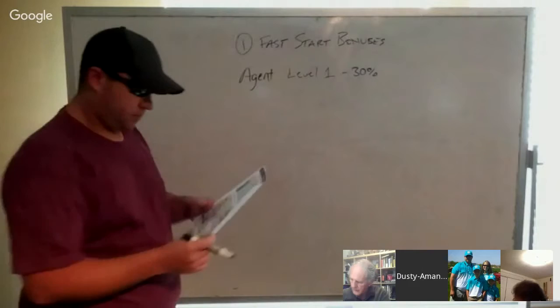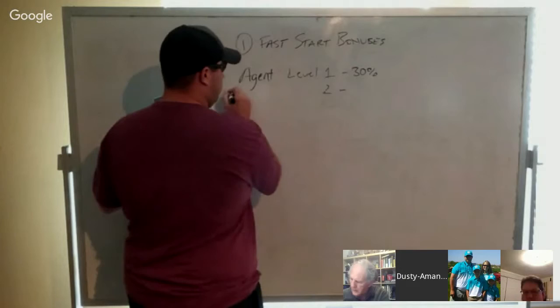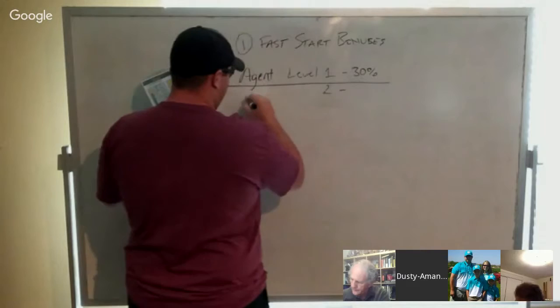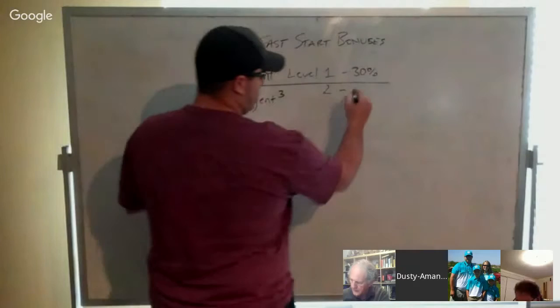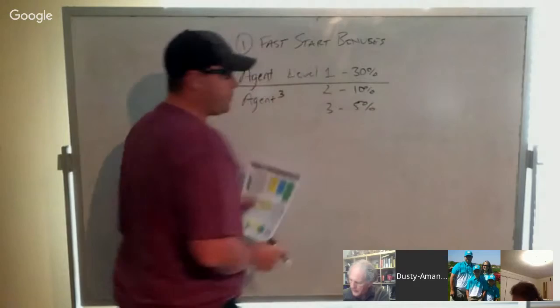On level two, I'm going to draw a line here. On level two, you have to be an agent three. What an agent three is, is any three personally enrolled agents qualify you for these overrides. So you get 10% on the second level, 5% on the third level.